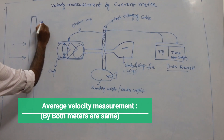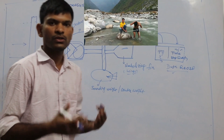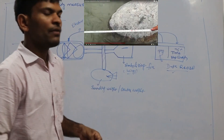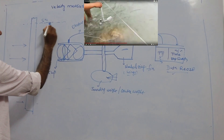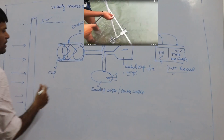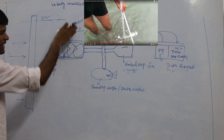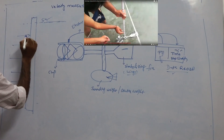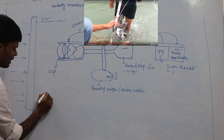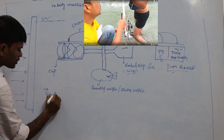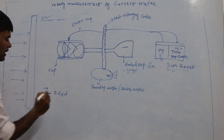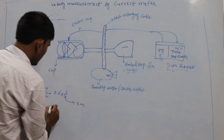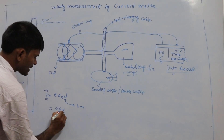Now, to measure velocity in a river — suppose my river is very shallow or small. In this case, I will measure the velocity at only a single point from the water surface. For a shallow stream, the measurement depth is 0.6 times the total depth. For example, if the depth is 3 meters, I will measure at 0.6 × 3 = 1.8 meters from the surface.